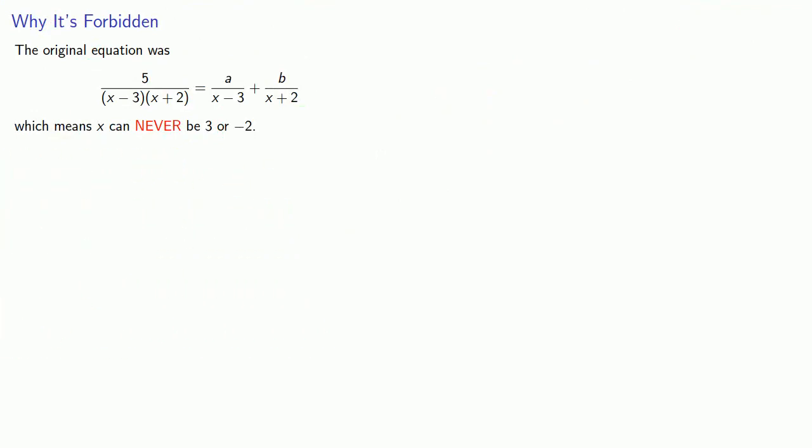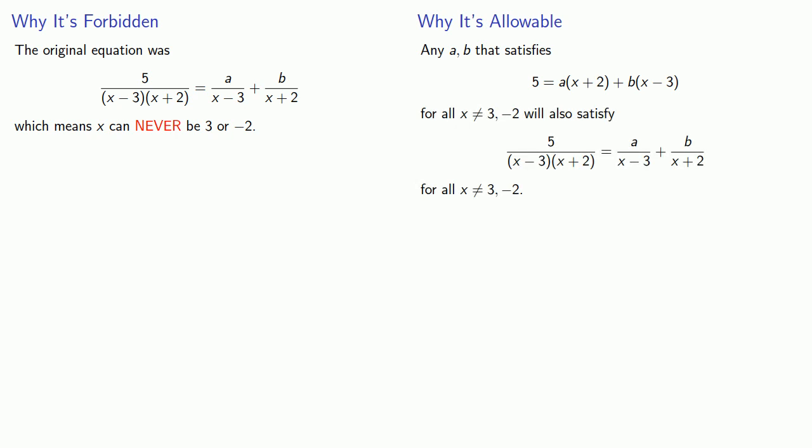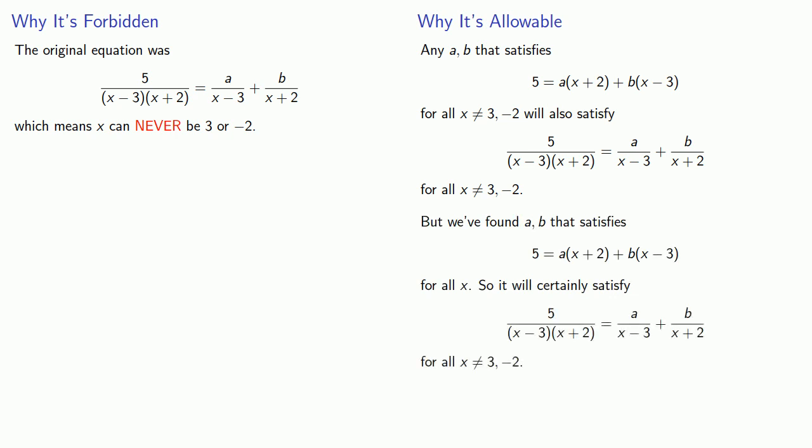So why did it work? Part of the reason that it worked is that any value of a and b that satisfies this equation for all x other than 3 or -2 will also satisfy this equation for all x other than 3 or -2. So again all we really need to do is to find an a and b that satisfies this equation for all x other than 3 or -2. Well we did one better. We found an a and b that satisfies this equation for all x which means it will certainly satisfy our original equation for all x other than 3 or -2.